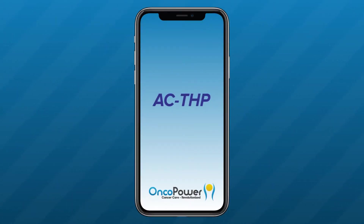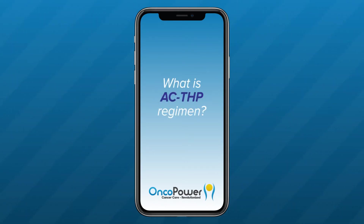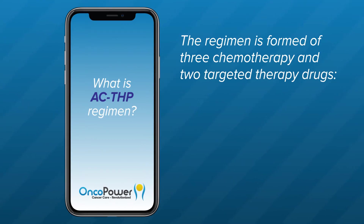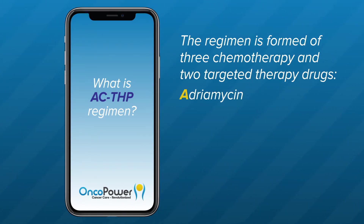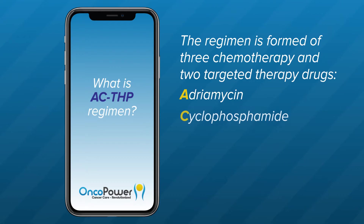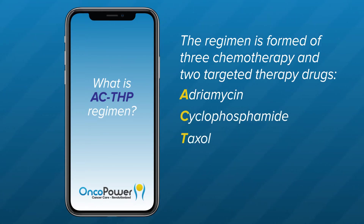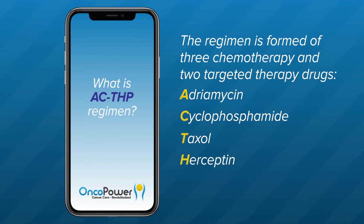ACTHP is a chemotherapy regimen used to treat breast cancer. The regimen is formed of three chemotherapy and two targeted therapy drugs. A is for adriamycin, C is for cyclophosphamide, T is for taxol, H stands for Herceptin, and P is pertuzumab.